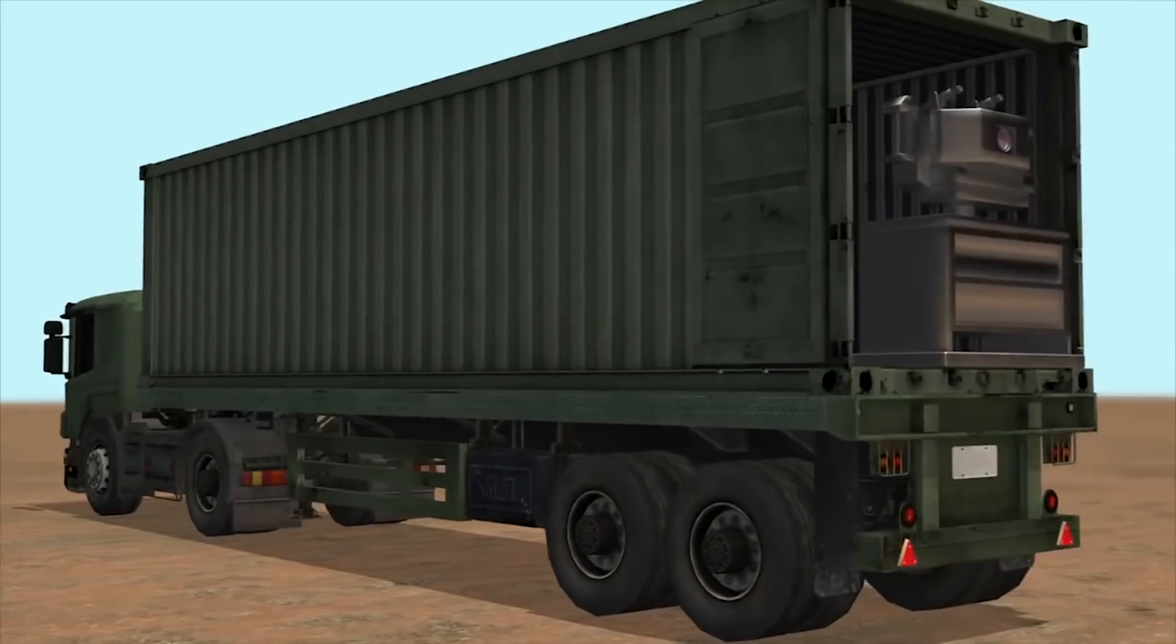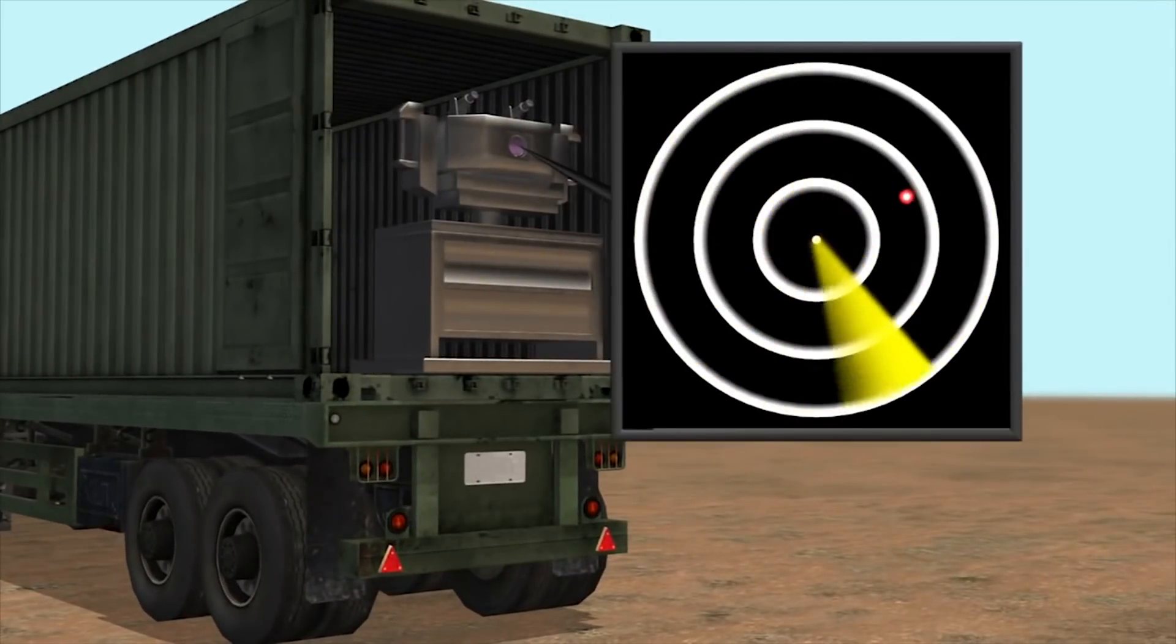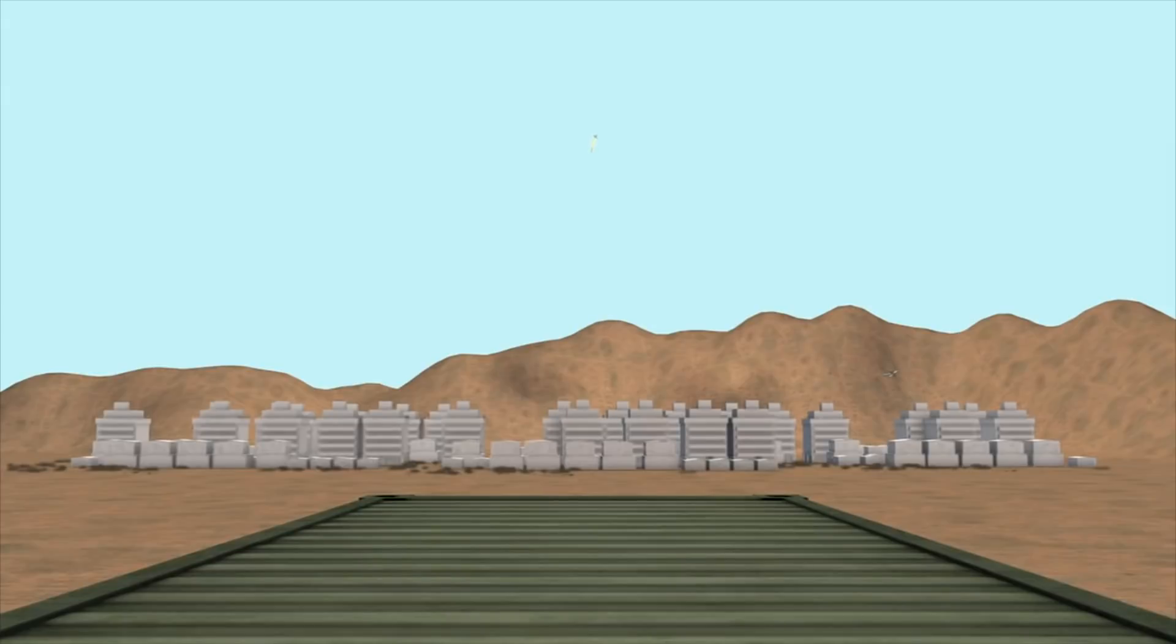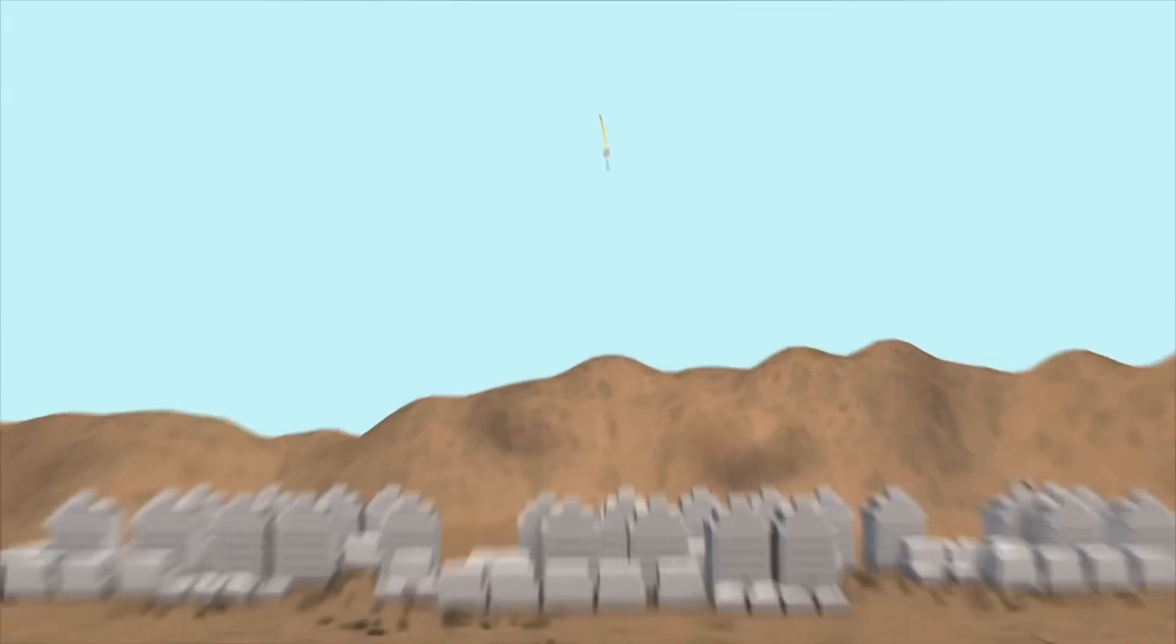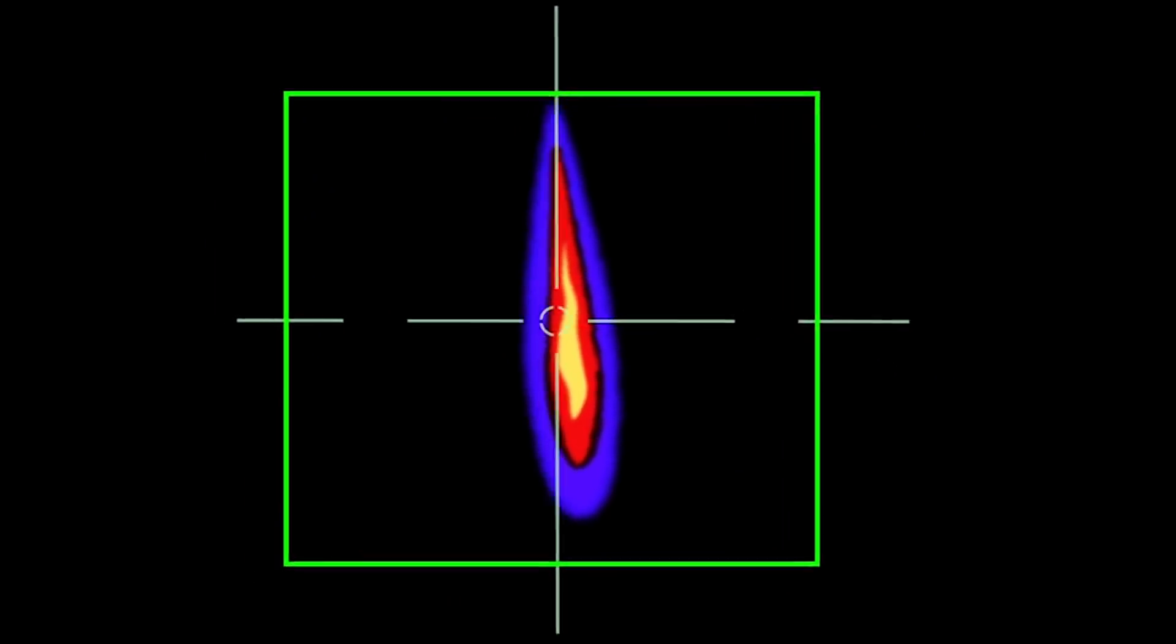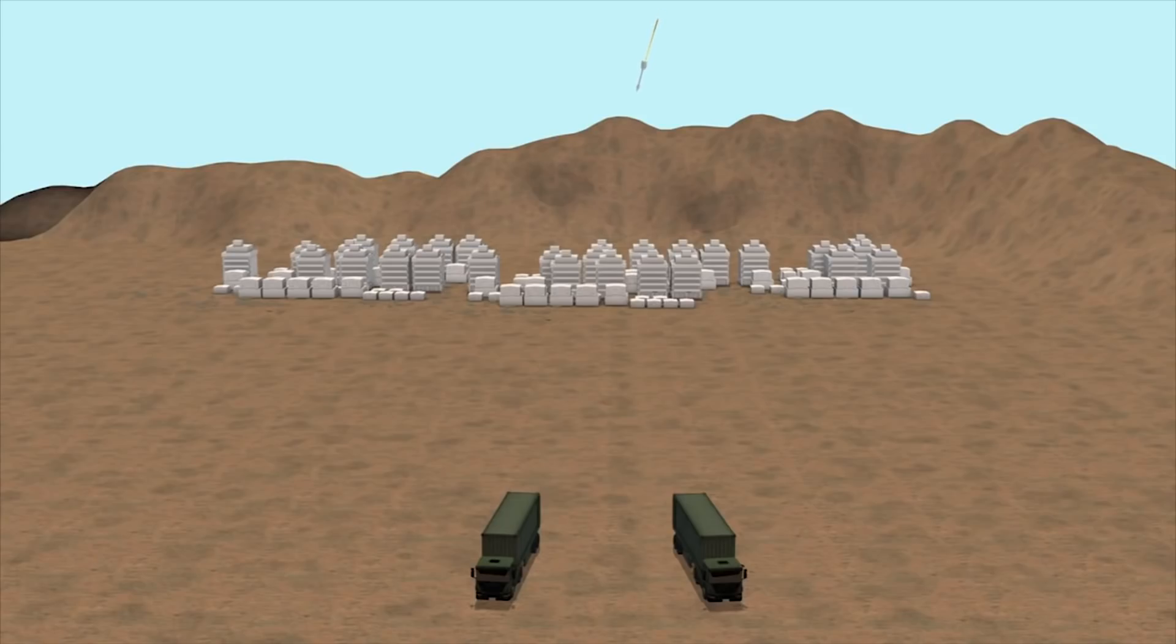The system, known as Iron Beam, uses air defense radar to detect incoming missiles. At closer range, a thermal camera carries out the missile tracking. When properly engaged with the incoming projectile, the system emits two lasers, reaching up to hundreds of kilowatts to destroy the target.